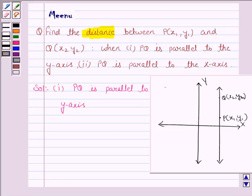Now we see that when PQ is parallel to the y-axis, every point on this line has the same abscissa. That is, x1 equals x2. That means the distance between the points P and Q is just the distance between y2 and y1. So the distance PQ is mod of y2 minus y1.